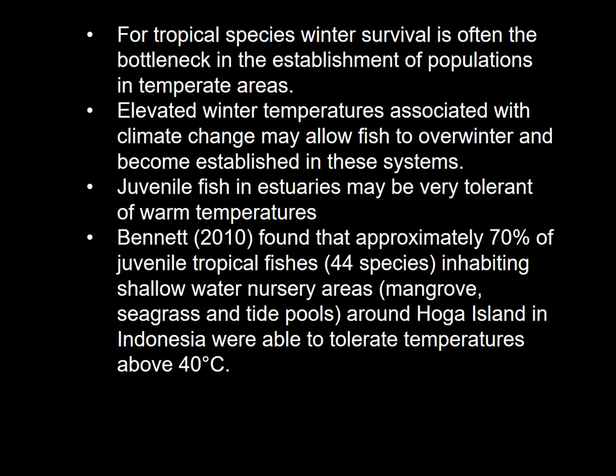For tropical species, winter survival is often seen as the bottleneck in the establishment of populations in temperate areas. With elevated winter temperatures associated with climate change, this may allow fish to overwinter and become established in these systems. Fish, especially marine fish, use estuaries as nursery areas — you get juvenile fish in estuaries — and these fish may be very tolerant of warm temperatures. Bennett found that approximately 70% of juvenile tropical fishes inhabiting shallow water nursery areas such as mangroves, seagrass and tide pools in Indonesia were able to tolerate temperatures above 40 degrees Celsius.